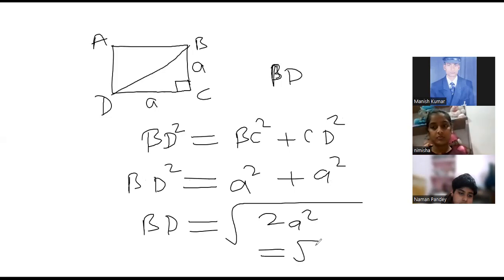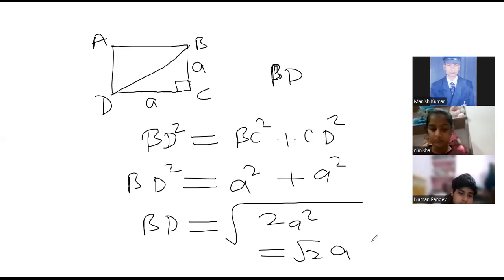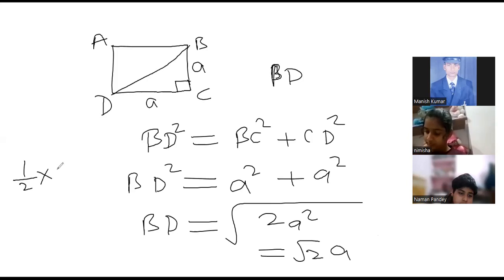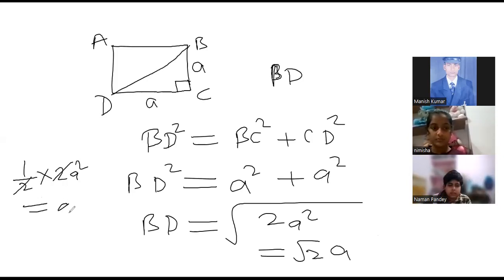Yes sir. Root 2 and A square root is A. So this means root 2A units. So this is understood? Yes sir. Okay. Now if we are writing half into diagonal square — diagonal square is what? 2A square. Yes sir. That means it is equal to A square. This is the area of a square.